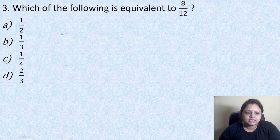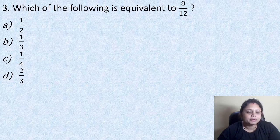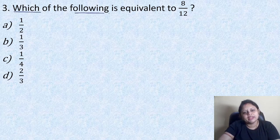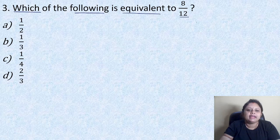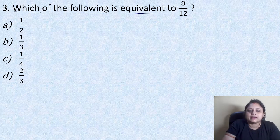Coming to the next question: which of the following is equivalent to 8 by 12? Option A: 1 by 2, B: 1 by 3, C: 1 by 4, D: 2 by 3. In the question it is asked which of the following is equivalent to 8 by 12. If we have to simplify this number, that is 8 by 12, what we can do? First we need to find the HCF of 8 and 12.